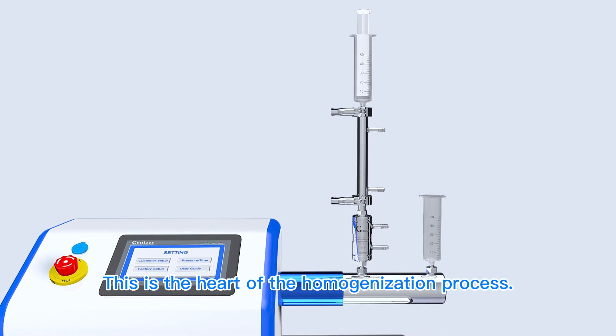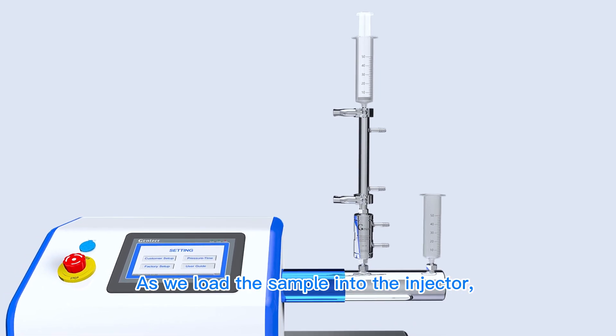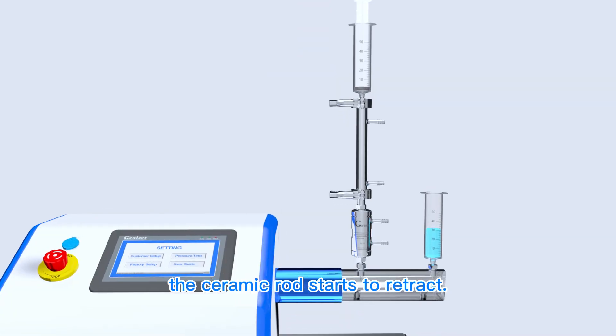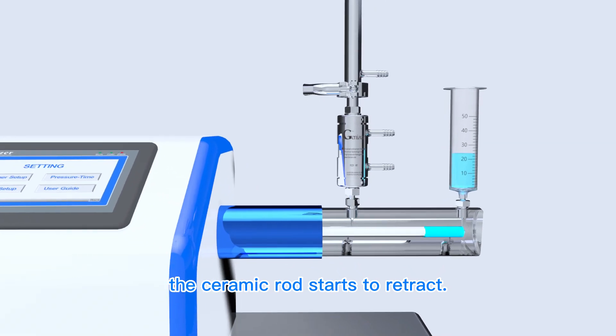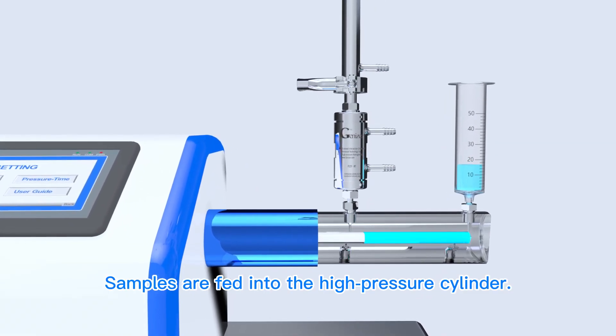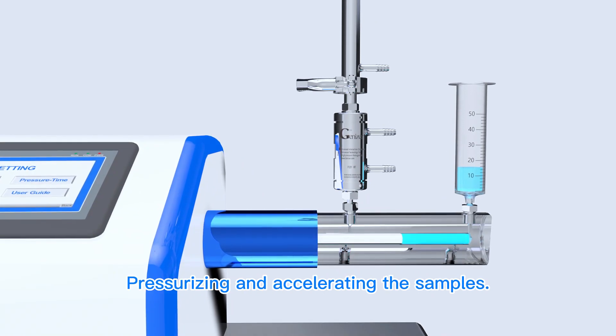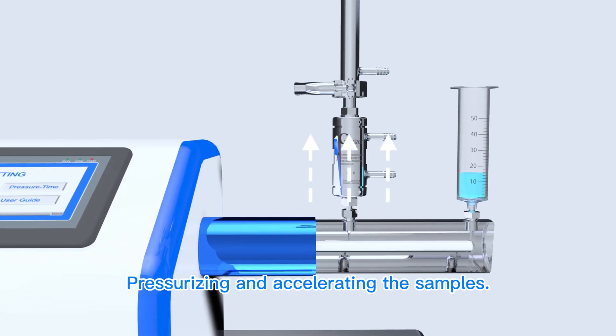This is the heart of the homogenization process. As we load the sample into the injector, the ceramic rod starts to retract. Samples are fed into the high-pressure cylinder. Then the plunger springs into action, pressurizing and accelerating the samples.